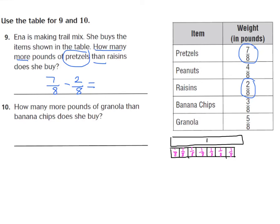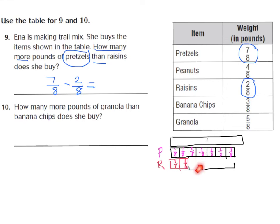I went ahead and drew a model. Here's my whole, and here are seven-eighths — if I went to the end it would be eight-eighths, but this is just seven-eighths pound of pretzels. Right below, I'll create two-eighths for the raisins: one-eighth, two-eighths. The question asks how many more pounds of pretzels than raisins — the difference is the portion that remains: one-eighth, two-eighths, three-eighths, four-eighths, five-eighths. So seven-eighths minus two-eighths is five-eighths.